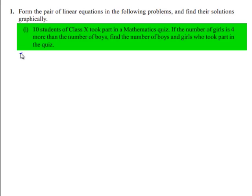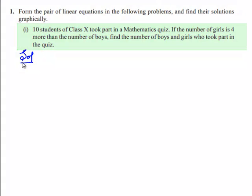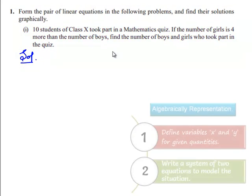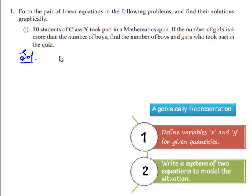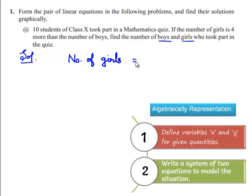Let us see the solution. In this problem we need to find the number of boys and number of girls. Let us assume the number of girls is equal to x and the number of boys is equal to y.